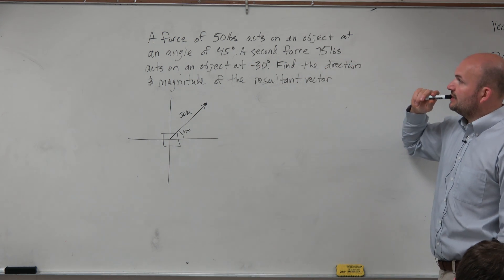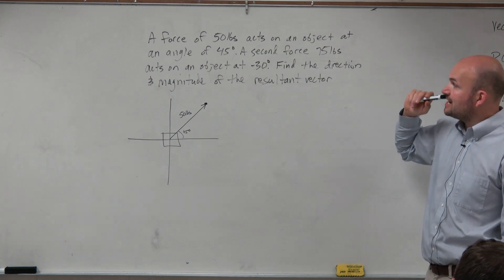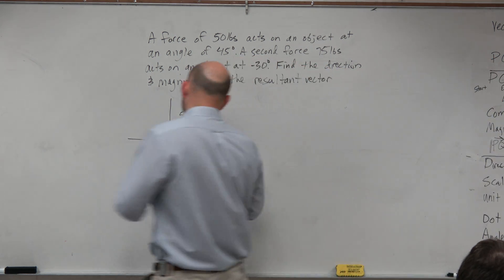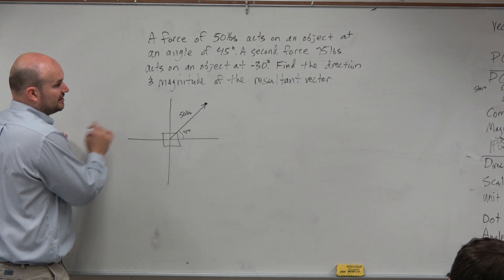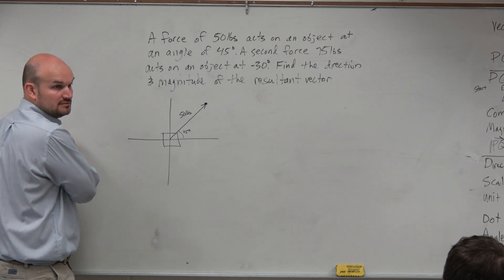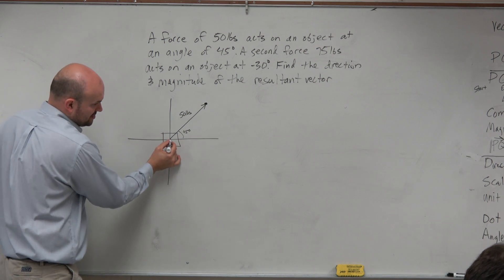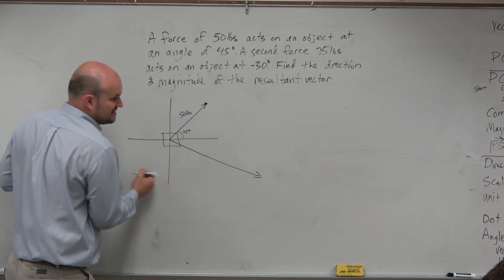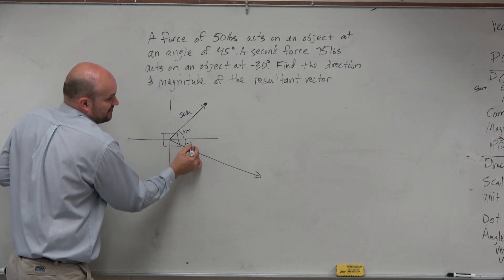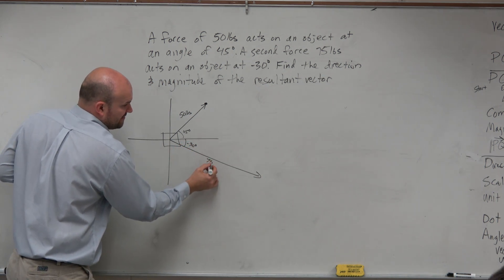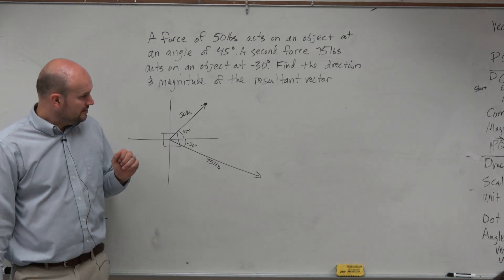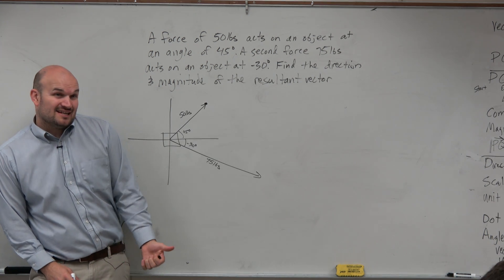Then it says a second force of 75 pounds acts on it at 30 degrees. So 75, negative 30. 75 is larger than 50, right? And 30 is like a little bit smaller. So maybe we could say something that looks like that. Negative 30 degrees. And say 75, oh, yes. Right?